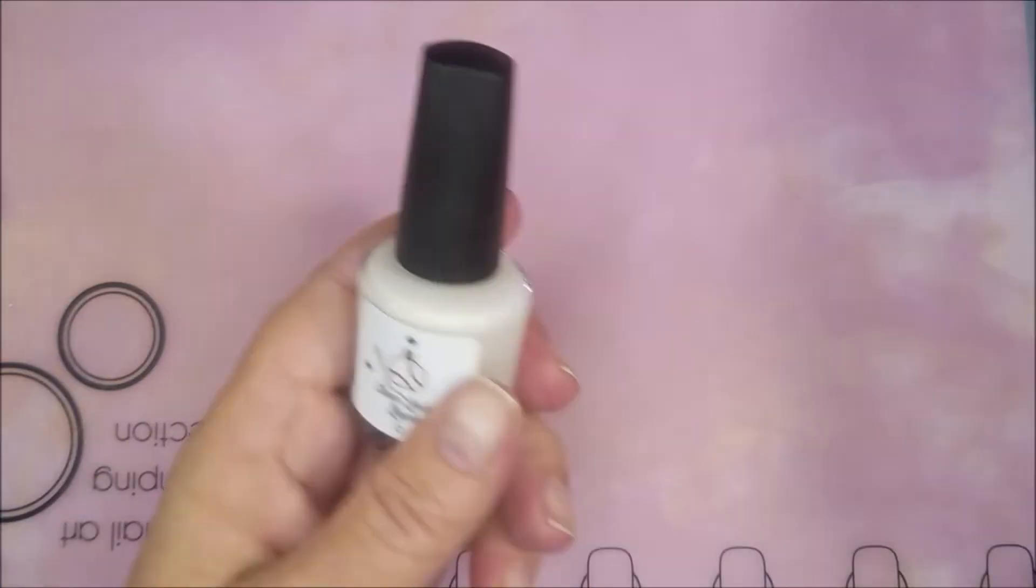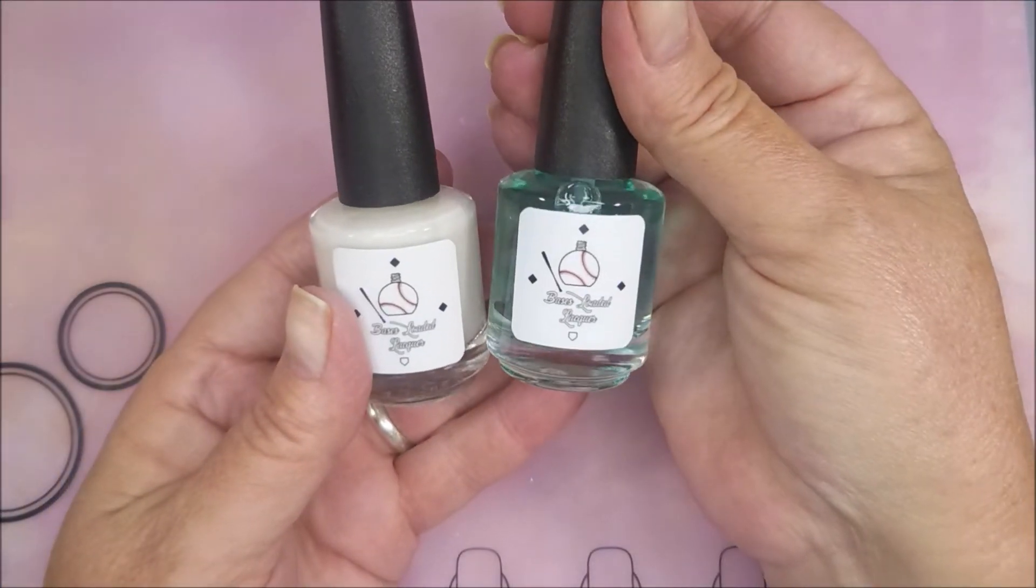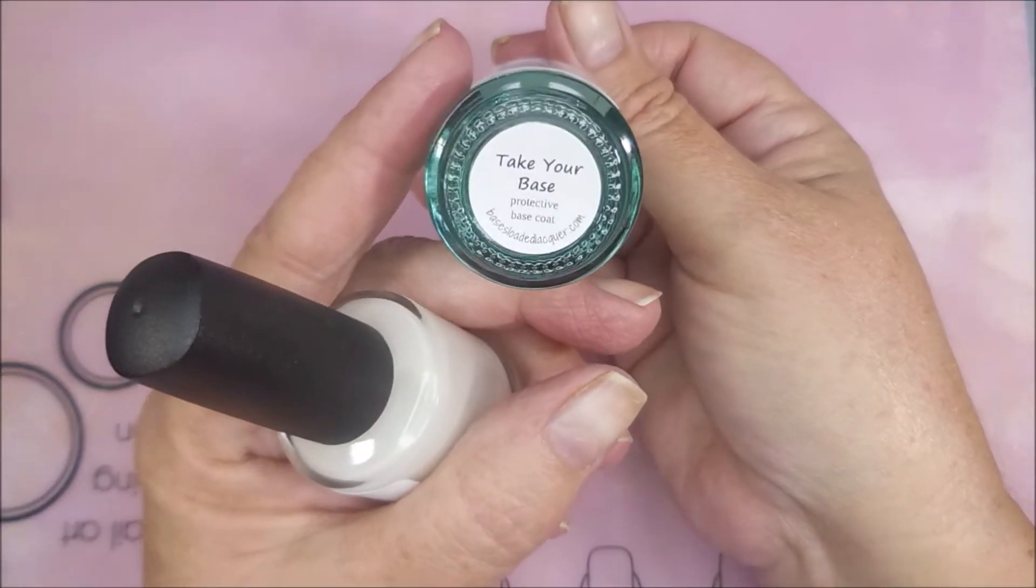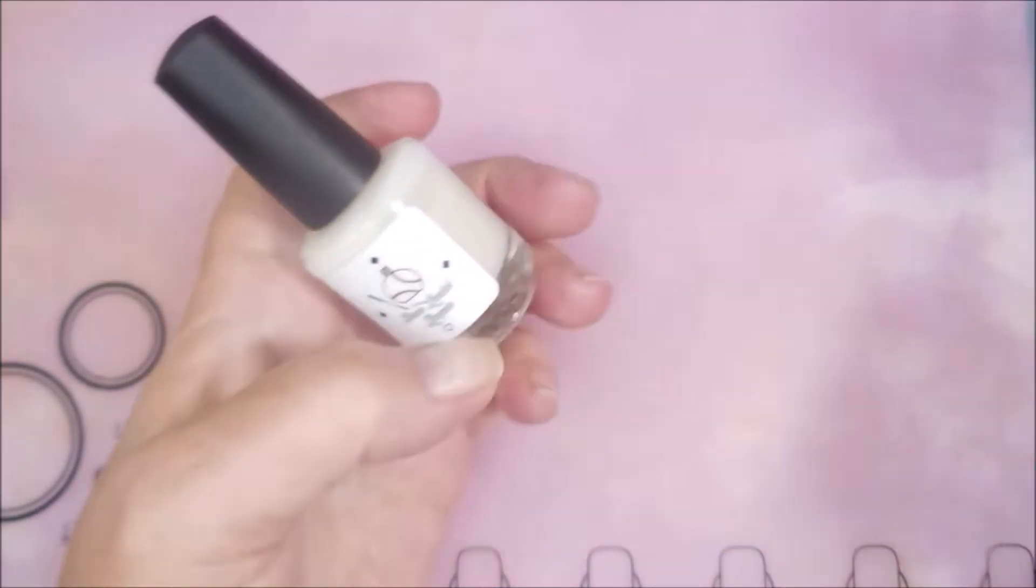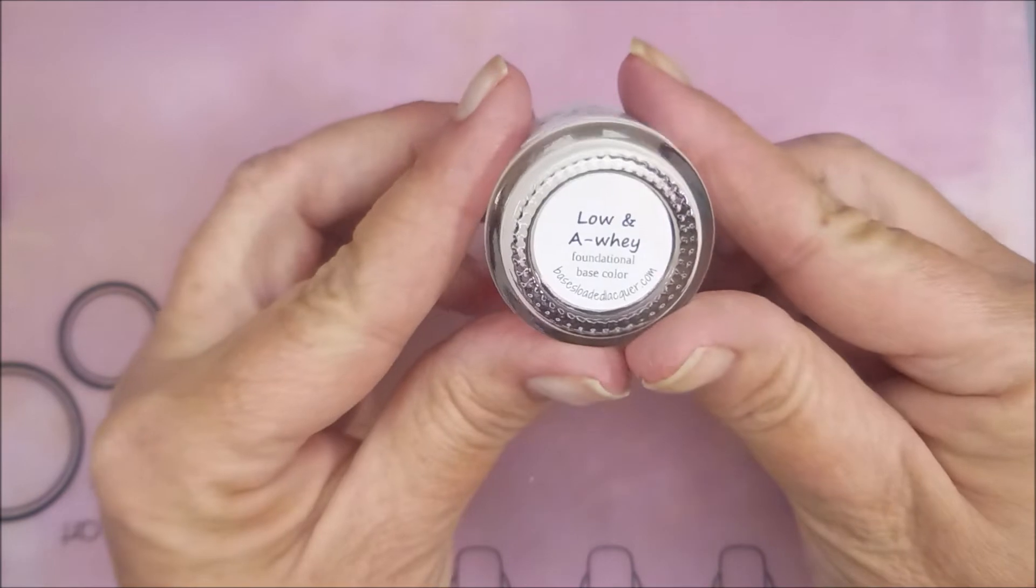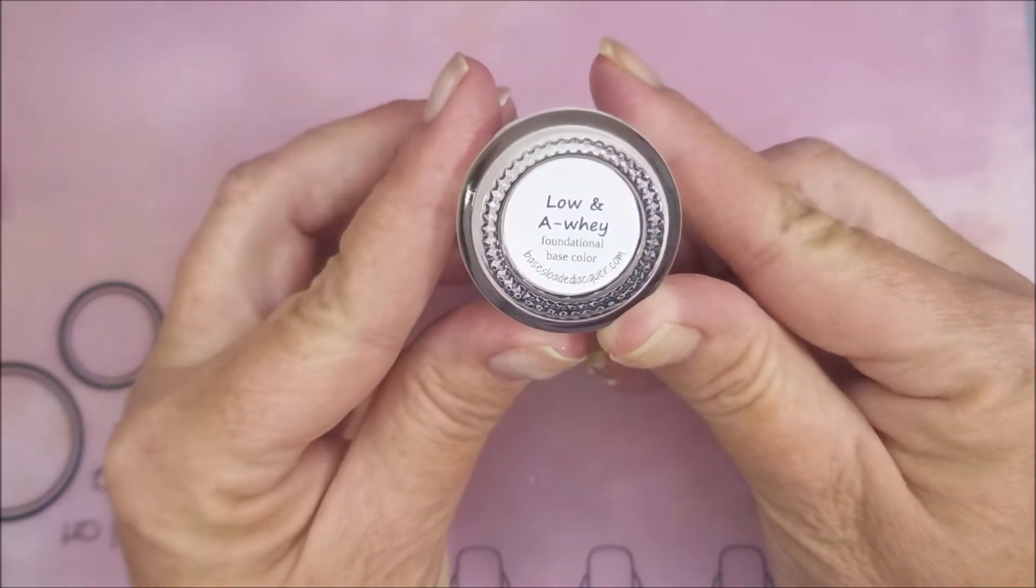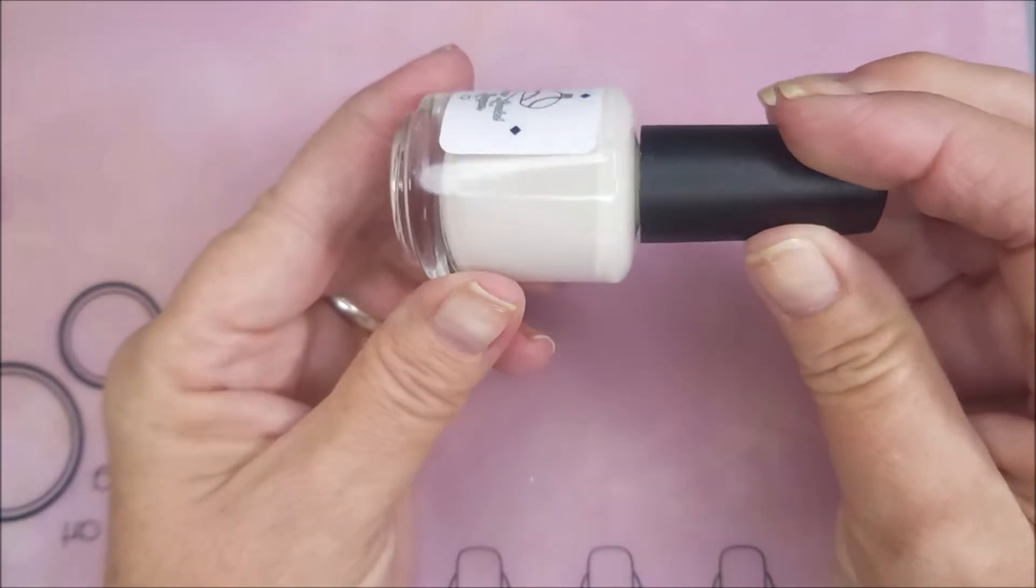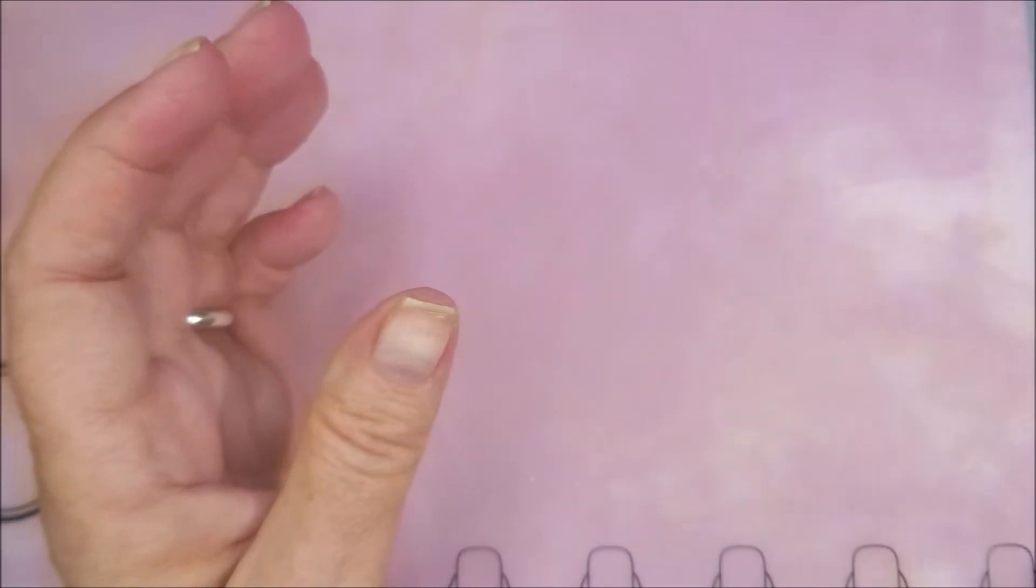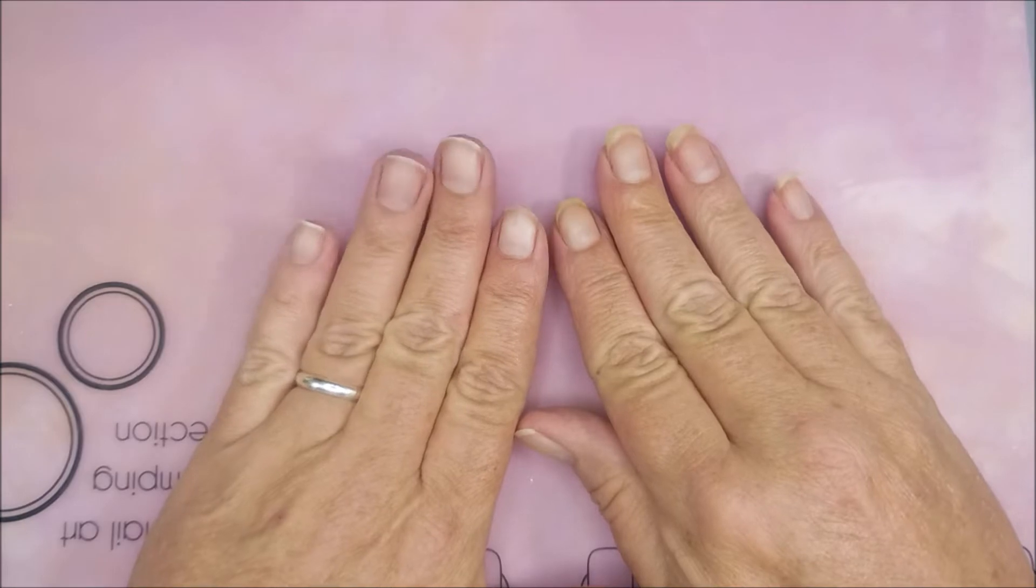Now, I do have some new ones from Bases Loaded Lacquer. We got Take Your Base, it's a protective base coat. And then we've got Her Low and Away, it's a foundational base color. So it's a real sheer color if you have yellowing on your nails or whatever, it'd be great for that.